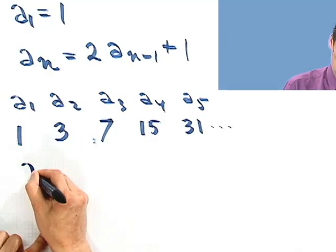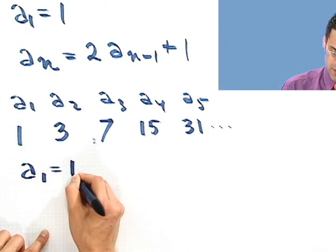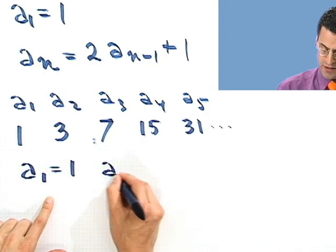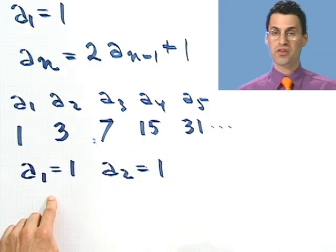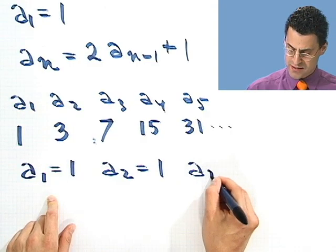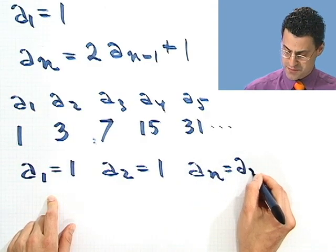Let me show you a very famous such sequence. Let's let a₁ equal 1, and I'm even going to tell you what the second one is. It equals 1 as well. But to get all the rest, what you just do is add the two previous people.